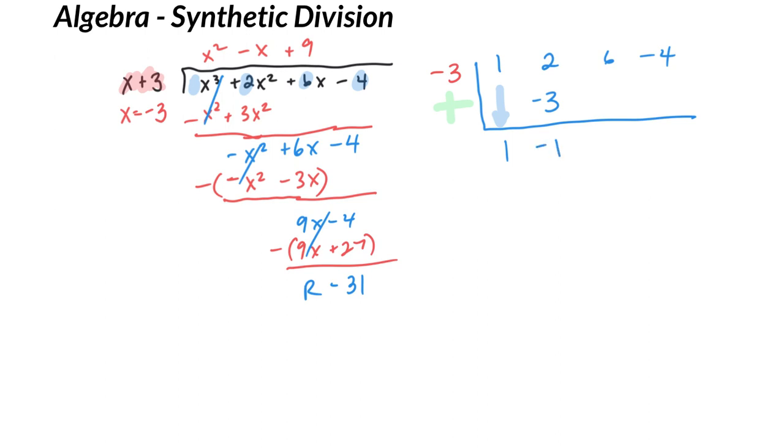Repeat the step. Negative 3 times negative 1 is 3. Add down. 6 plus 3 is 9. Negative 3 times 9 is negative 27. Add.